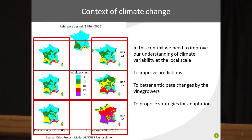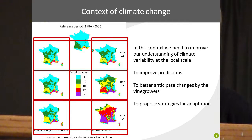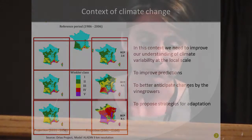These maps represent the projection of Winkler classes in the short term period of 2021 to 2050, and long term to 2081 to 2100, in different RCP scenarios: 2.6, 4.5, and 8.5. You can see that the majority of French vineyards are concerned by this change, but it is more or less important depending on which scenario is taken into account.